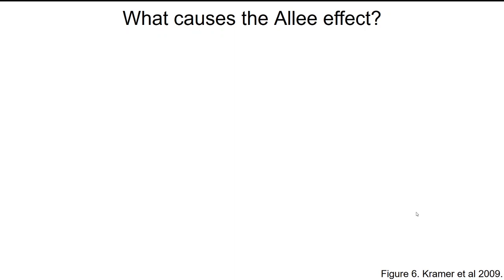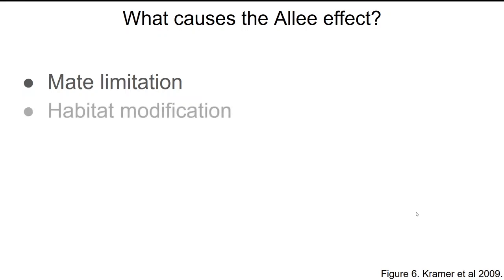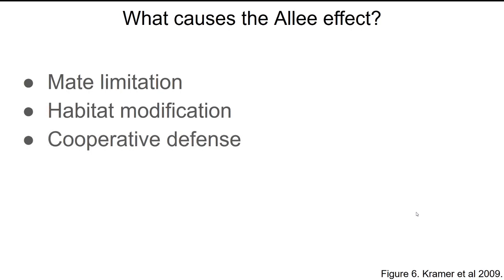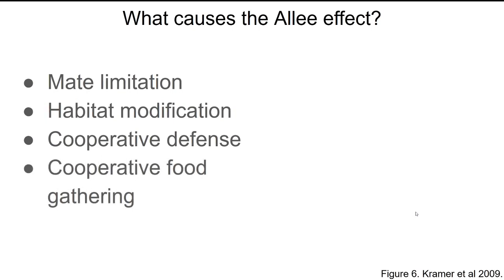So what causes this so-called Allee effect? There are a couple of things. Mate limitation is one way — if individuals can't find one another to mate, assuming a eukaryotic sexual population, you can't make babies. Sometimes organisms modify the environment so much that they have a positive impact on one another, and if you can't make that environment a good, healthy place for you and others like you, your population's not going to be growing. Some other organisms have cooperative defense mechanisms, whether that's schooling in fishes or alarm calling — lots of ways individuals protect one another by sharing the same area. In other cases, there's cooperative food gathering, things like pack hunting or communal webs for spiders.